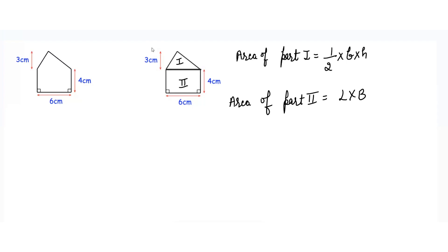This diagram I have divided into two parts. The first part is a triangle and the second part is a rectangle. Area of part 1 is equals to 1 by 2 into b into h, which is the area for a triangle. So what is the value for b here? b is the base, so the base over here is equals to 6 cm. So I will write 1 by 2 into 6, and height is already given which is equals to 3.